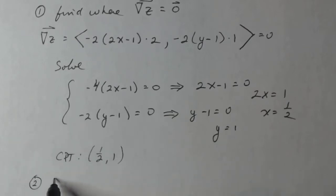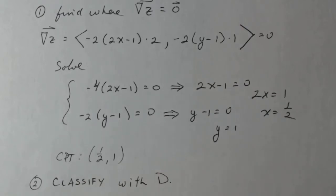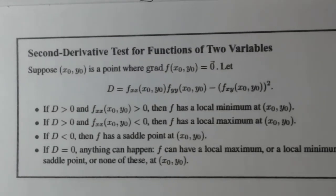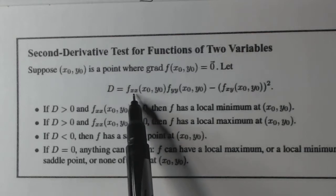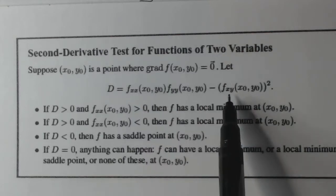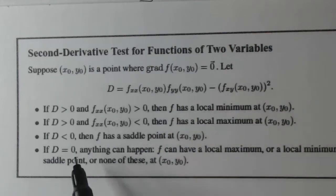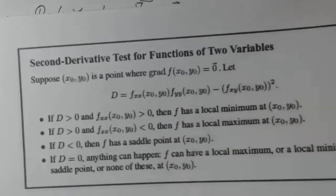So step two is classify, and what I mean by classify is: is it a local max or local min or a saddle point, using the discriminant D. Now I have that here. This is what we're gonna use. So in order to use the discriminant, I have to have f sub xx, f sub yy, and f sub xy. And then once I have that formula put together, I can use this information here to classify the critical point.